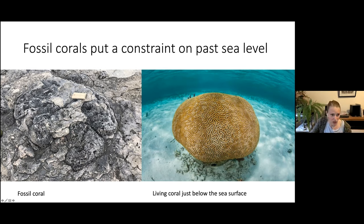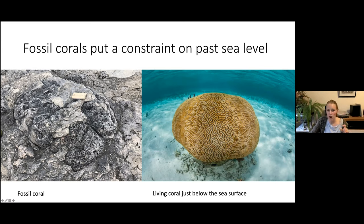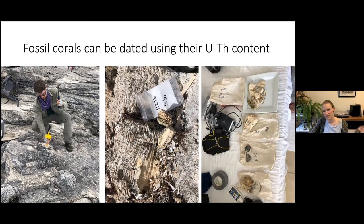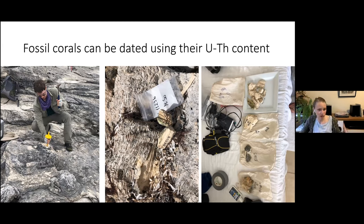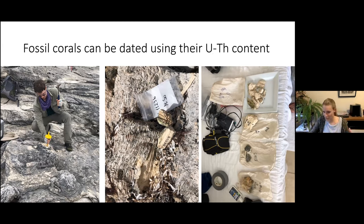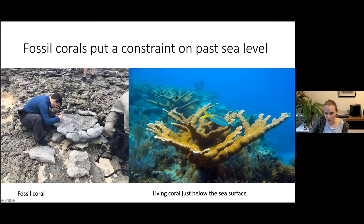Here is a living brain coral, and here on the left is a fossil coral that is 125,000 years old — it was covered with sand that turned into rock. We know that at the time this fossil coral was alive, sea level was higher, because corals don't grow above sea level. We also know sea level was probably within a couple of meters of this specific coral, so it's a pretty tight constraint on how high sea level was. We can also chip off a small piece and date it in the lab using the uranium-thorium isotope system, which works similarly to carbon dating.